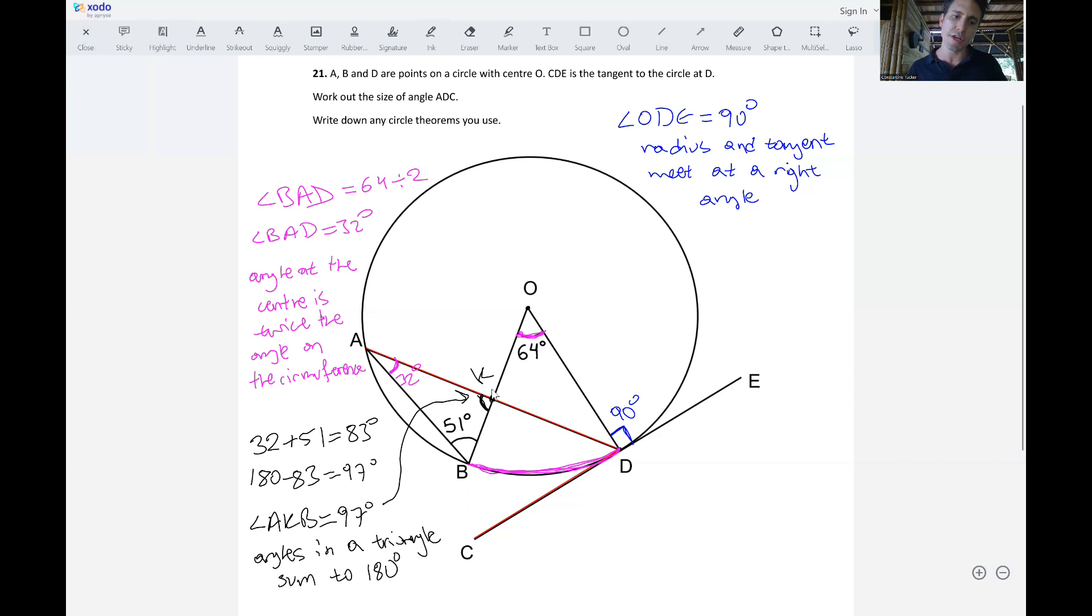Notice we have this angle right here, OKD. This angle is in fact equal to the angle AKB because they are vertically opposite, so opposite this vertex. So that means that this angle, I'm going to draw an arrow here, OKD.